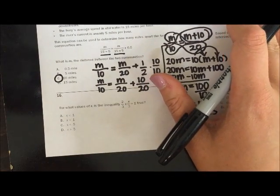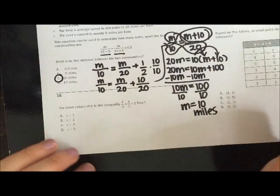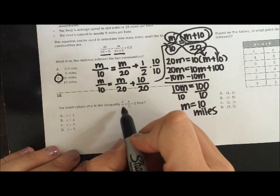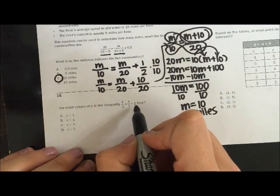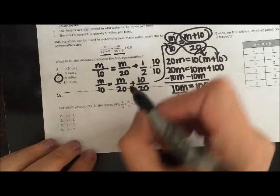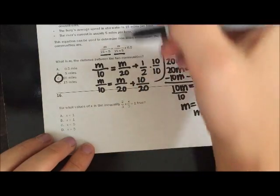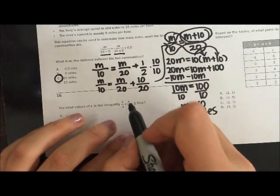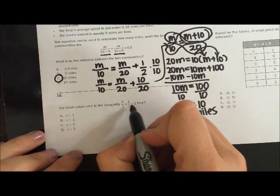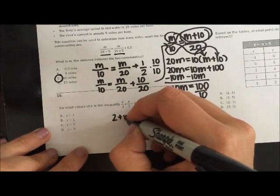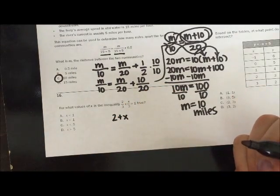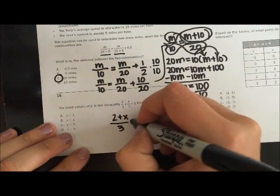16, for what values of x is the inequality 2 thirds plus x over 3 greater than 1 true? So we're solving for x again. But look, just like 14 and 15, I'm adding two fractions. But now my denominators are equal. So I can just go ahead and add the top 2 plus x. They're not like terms, so I can't combine them. Over 3 is greater than 1.